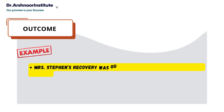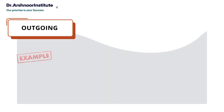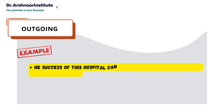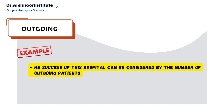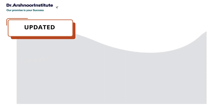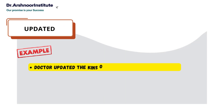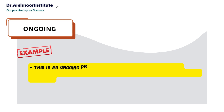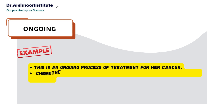'Outcome': Mrs. Stephen's recovery was the outcome of the intensive care provided to him. The next word is 'outgoing': the success of this hospital can be considered by the number of outgoing patients. 'Updated': the doctor updated the kin of Mr. Sam about his progress. This is an ongoing process of treatment for her cancer.